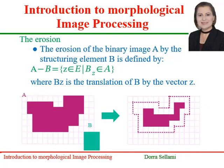Applying the set theory, the erosion of the binary image A by the structuring element B is defined as follows. A minus B equals the set of elements that, once translated by B by a vector Z, remains in the set A. The above figure illustrates this definition. We represent the eroded version of the set A. As can be seen, each pixel in this shape, if translated by the structuring element B, remains in the set A.